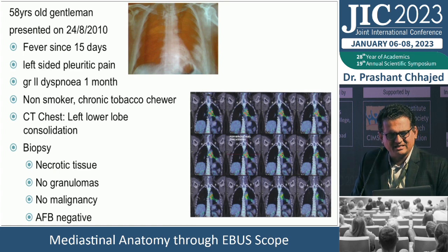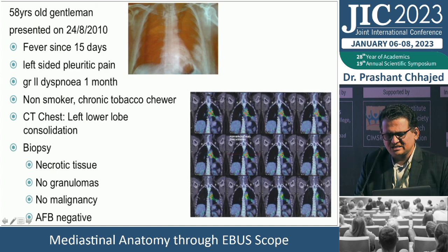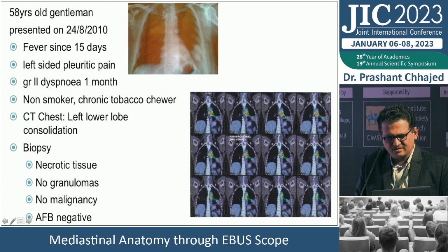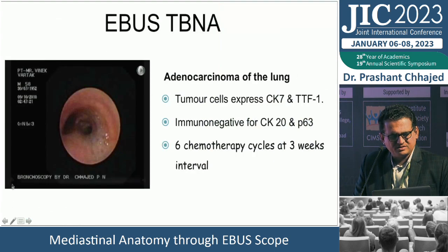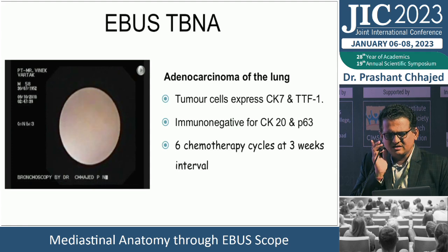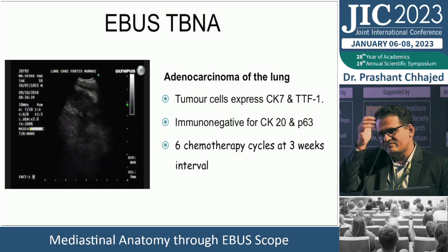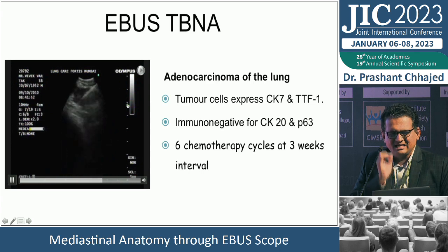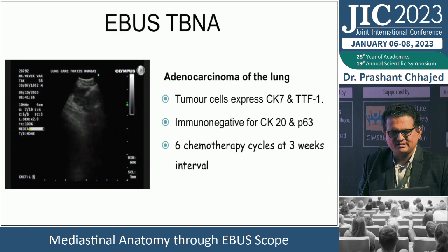Case example: a 58-year-old gentleman who underwent CT-guided biopsy for a peripheral lesion, which showed only necrotic tissue. PET scan showed only central areas lighting up. We then performed EBUS and obtained a biopsy. Even sub-centimeter lymph nodes — down to 8 mm — can be successfully sampled. With a 5 mm scale reference visible, this node was about 8 mm and yielded enough material for immunohistochemistry.